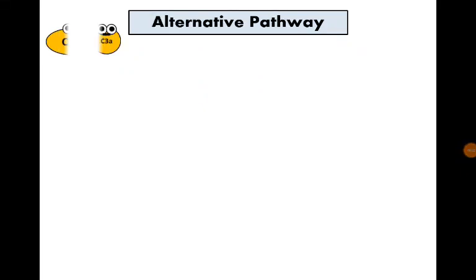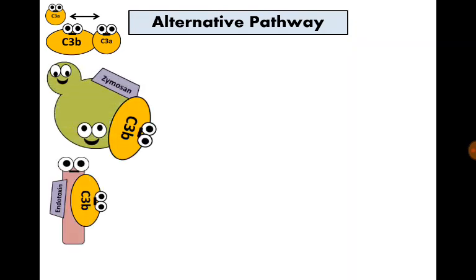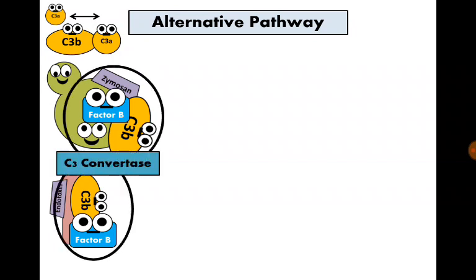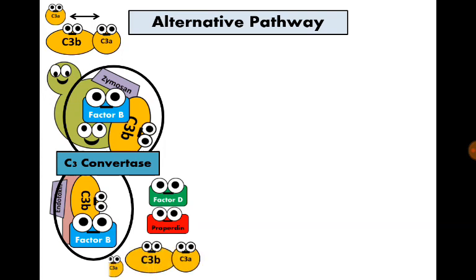The last pathway, or the alternative pathway, has a trigger that is either a bacteria carrying endotoxin or a fungus carrying zymosan. C3 is present normally in serum and spontaneously divides into C3A and C3B. C3B in serum becomes attached to a bacteria carrying endotoxin or to a fungus carrying zymosan. Factor B then comes and becomes attached to them, and this complex is considered the C3 convertase of the alternative pathway, stimulating more C3 hydrolysis. Factor D and properdin help in the stabilization of this complex.